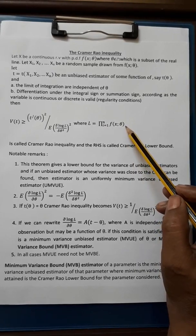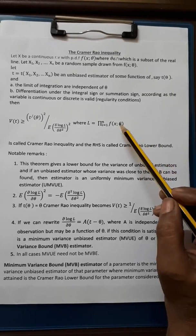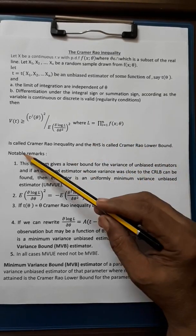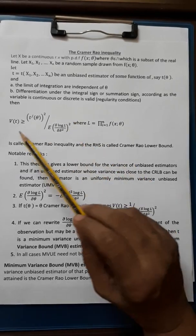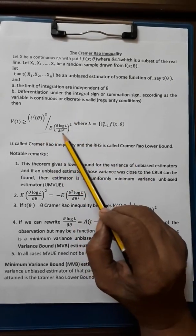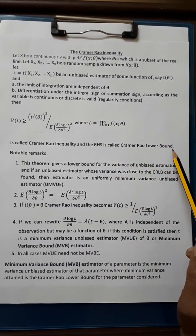That is likelihood function of the probability density function of x. This is called Cramér-Rao inequality and the RHS is called Cramér-Rao lower bound.